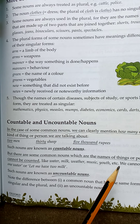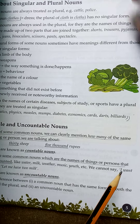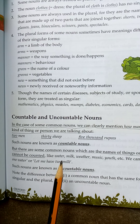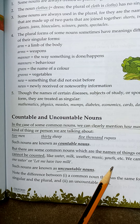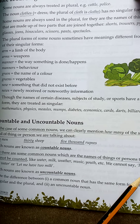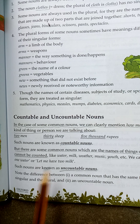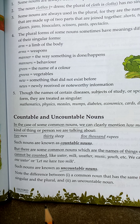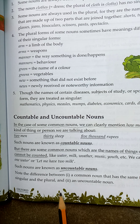But there are some common nouns which are the names of things or persons that cannot be counted — like water, milk, weather, music, youth, etc. We cannot say 'I want one water' or 'give me two milk.' We don't count water, milk, weather, or music that way. These are uncountable nouns — we don't count them.